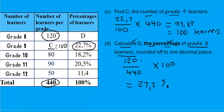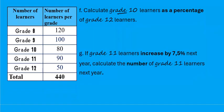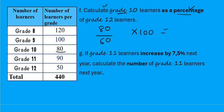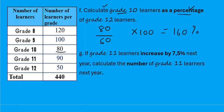This one's easy: calculate grade 10 as a percentage of grade 12. We are calculating a percentage, so the golden rule applies — multiply by 100. We put grade 10 over grade 12, so the calculation is 80 over 50 times 100, which gives you 160%.